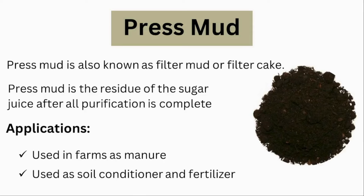Press mud is also known as filter mud. It is the residue of the sugar process after all purification is complete. Filter mud is used on farms as a manure. It is also used as a soil conditioner and fertilizer due to its high organic content, as it improves soil structure, enhances water retention, and provides essential nutrients to plants.